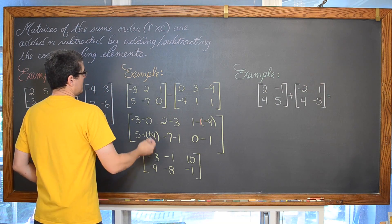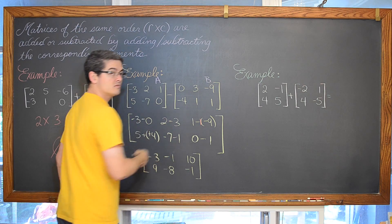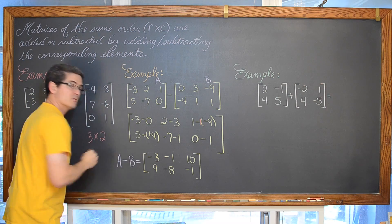I guess I could have some notation up here. You could call this matrix A and this matrix B. So of course, now this is going to be matrix A minus matrix B.